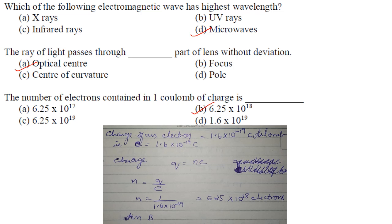The number of electrons contained in one Coulomb of charge: charge of an electron is 1.6 × 10^-19 Coulomb. We know that q = ne, so n = q/e = 1/(1.6 × 10^-19) = 6.25 × 10^18 electrons.